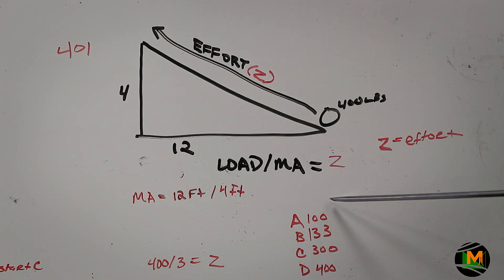The options are 100 pounds, 133 pounds, 300 pounds, and 400 pounds. So 400 divided by 3 gives you the effort, which would be 133 pounds. So the correct answer for 401 would be option B, 133 pounds.